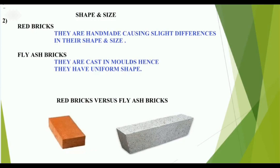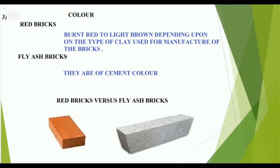On the basis of shape and size: red bricks are handmade, causing slight differences in their shape and size. Fly ash bricks are cast in molds, hence they have a uniform shape. Regarding color: red bricks range from burnt red to light brown depending upon the type of clay used, while fly ash bricks are of cement color.